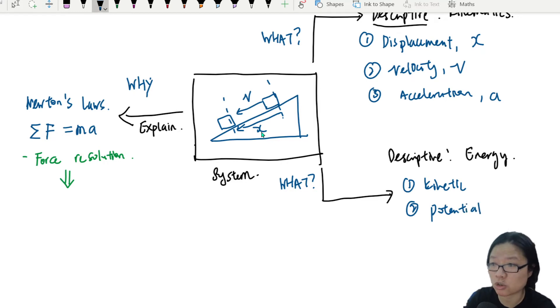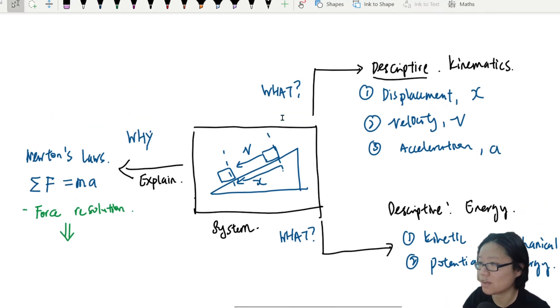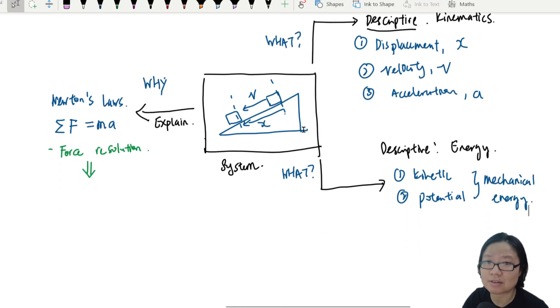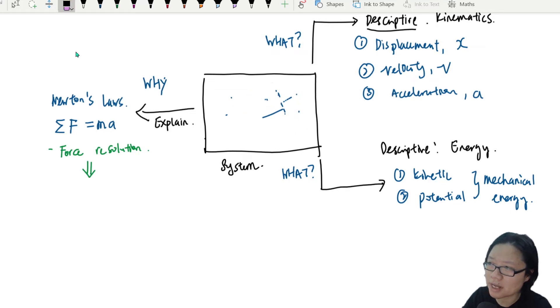But we could also talk about energy. We could say that there is a gain in kinetic energy or there is a gain in potential energy. Of course, this potential can be a few types. Like in the inclined plane, it's gravitational potential. And these both are what we call mechanical energy. So if you are familiar with this in AS, you will notice that normally when you're given a system, these are the skills that you should have.